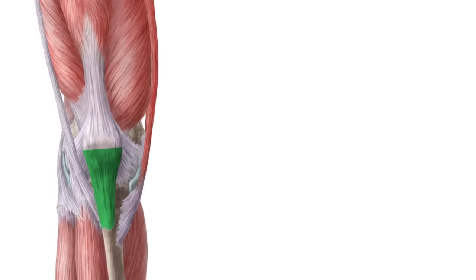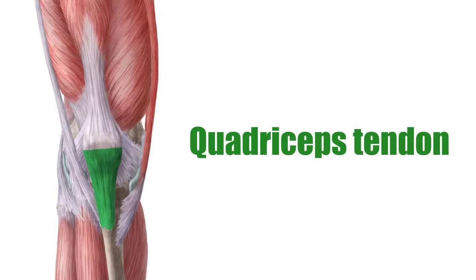The quadriceps tendon runs above the ventral side and through the periosteum of the patella and finally inserts at the tuberosity of the tibia. The part below the patellar apex is referred to as the patellar ligament, seen here in green.